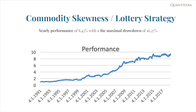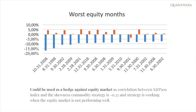Therefore, if the equity market becomes bad, our strategy should still be profitable. What is more important, let's look at the worst months of the S&P 500 index, which are the blue bars in the graph. Now we can compare it with the performance of this strategy, which are the orange bars in the graph. We can see the performance of the suggested strategy is at most times positive, and therefore the investor would be able to hedge their equity portfolio.